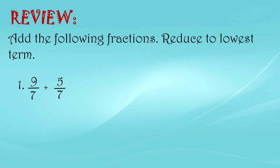In that case, all we do is add the numerators and copy the denominator. So 9 plus 5 equals 14, and the denominator 7 is copied. Our answer is 14 over 7. But 14 over 7 can be simplified — dividing 14 by 7 gives us 2. So the answer is 14 over 7, or 2.